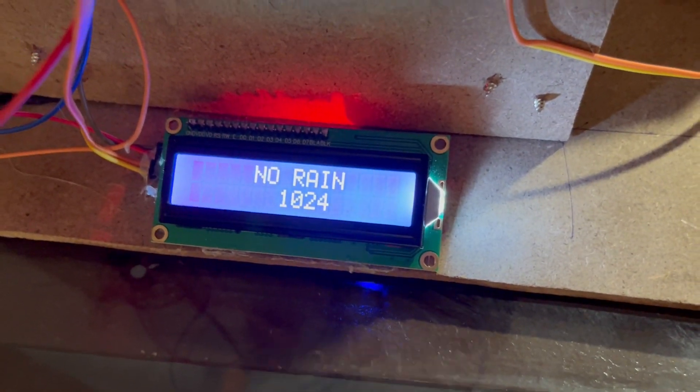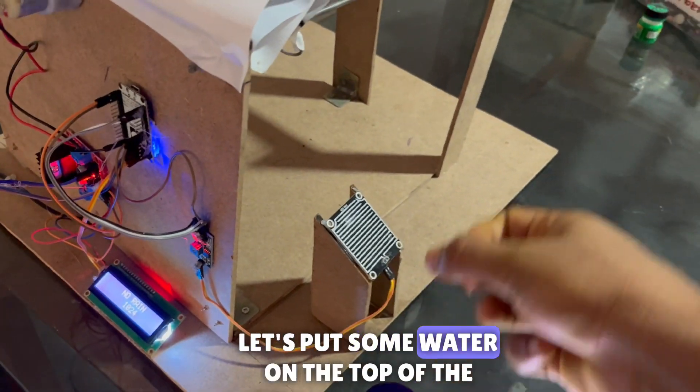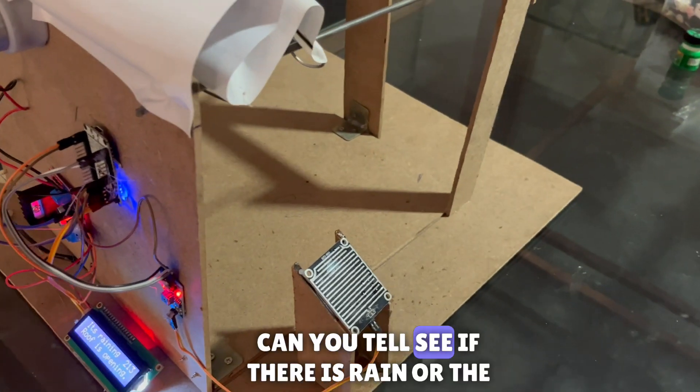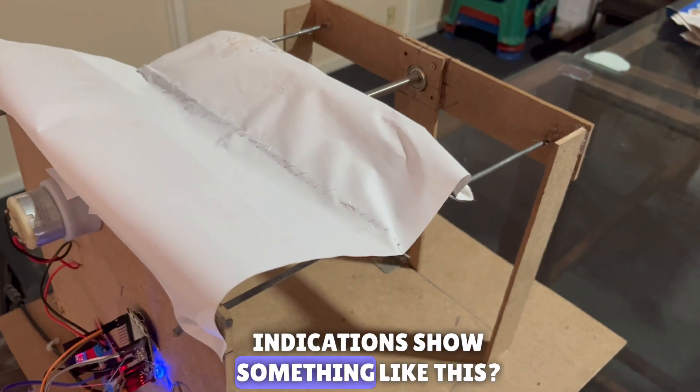Now currently it is indicating there is no rain. Let's say when there is rain, let's put some water on top of the sensor. Here you can see if there is rain, the indications show something like this.